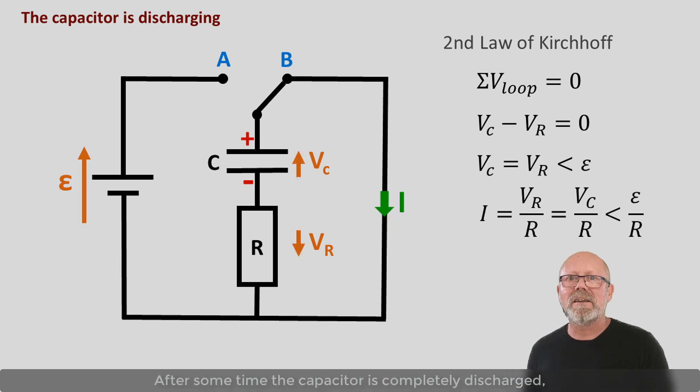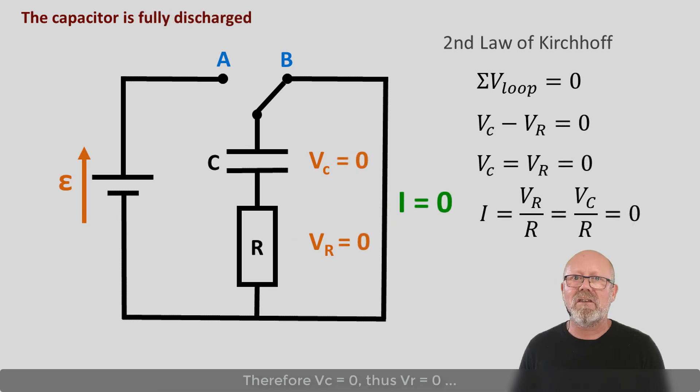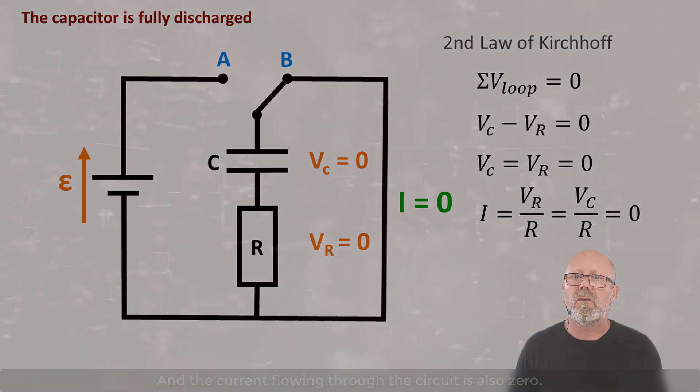After some time, the capacitor is completely discharged. Therefore, VC equals zero. Thus, VR equals zero. And the current flowing through the circuit is also zero.